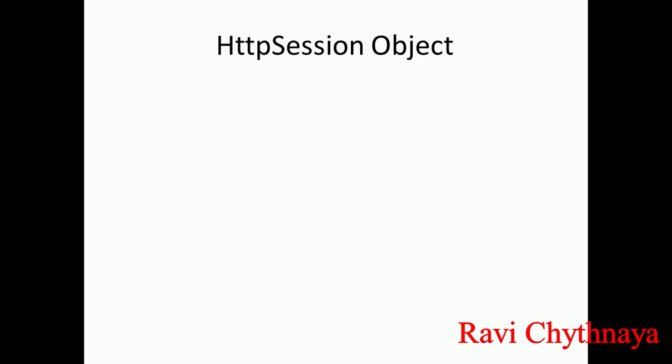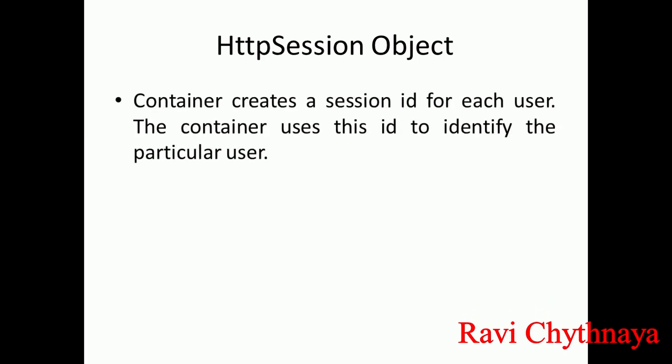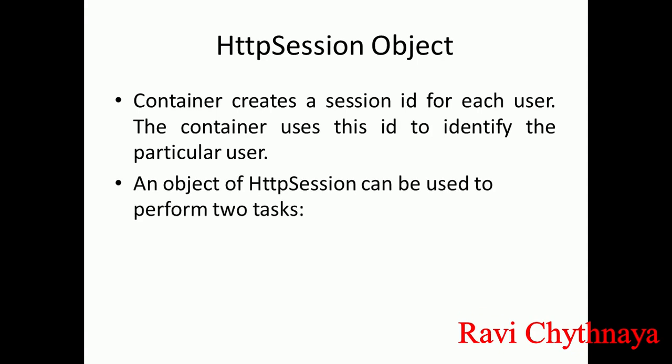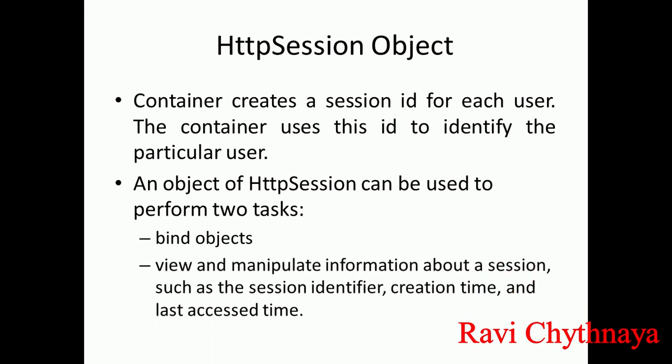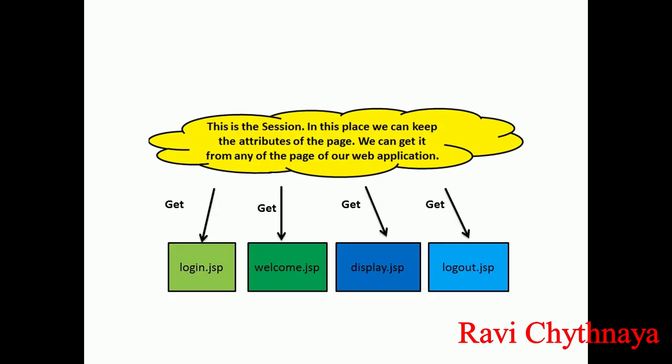The HTTP session object is a predefined implicit object available in JSP. That session object is used to set and get attributes for users to create their sessions in JSP. The container — the JSP container — creates a session ID for each user. The container uses this ID to identify the particular user, and an HTTP session object can be used to perform two tasks: binding objects to data, and viewing and manipulating session information such as session identifier, creation time, and last access time.